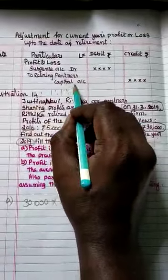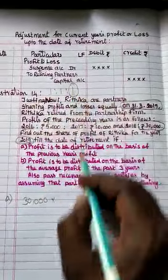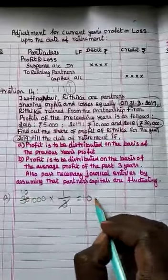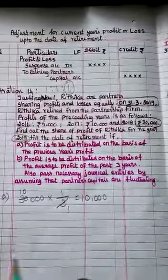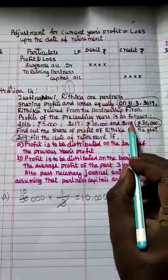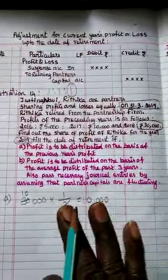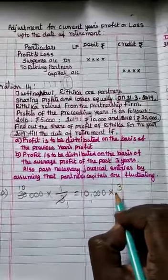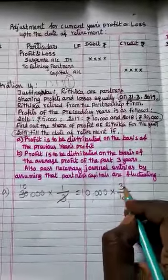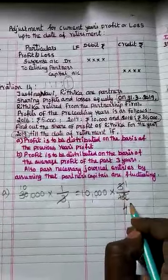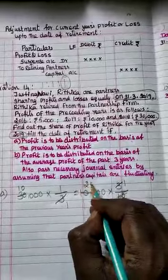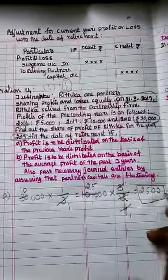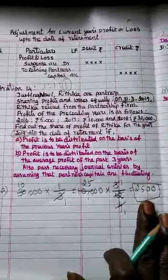The ₹30,000 is for all three partners — Justina, Navina, and Hrithika. The sharing ratio is 1:1:1, so Hrithika's share is 1/3. One-third of ₹30,000 is ₹10,000 — that is Hrithika's share of profit for the entire academic year 2018. But since Hrithika only worked 3 months, the amount for 3 months is: ₹10,000 × 3/12 = ₹2,500. This ₹2,500 is the profit amount to be settled for Hrithika for 3 months in 2019.